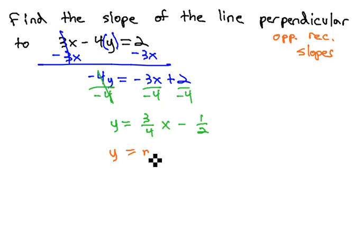If we remember y equals mx plus b, we can see the slope of this line is 3 fourths. Our slope will be the opposite reciprocal, negative 4 thirds.